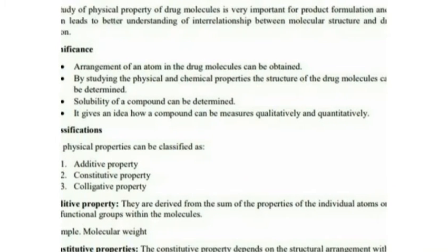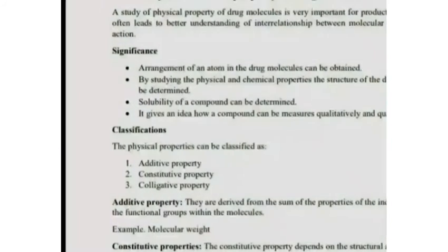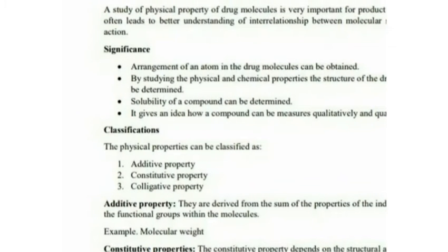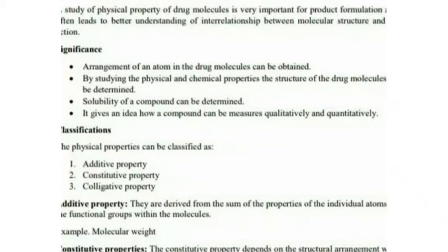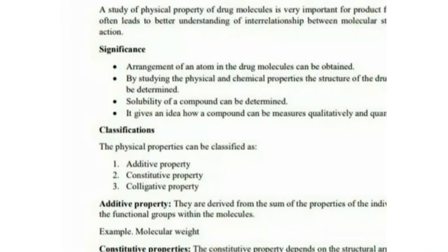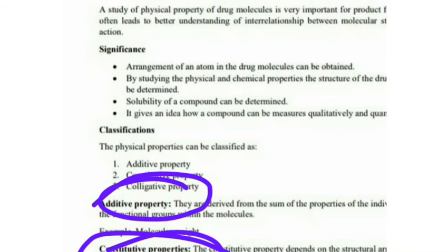Next, constitutive property — that is structural arrangement, where the arrangement is within the molecule. Constitutive property depends on the structural arrangement of the molecule. Colligative property depends on the number of particles present. For example, NaCl gives sodium and chloride ions. That is the colligative property. Summary: additive property, constitutive property — structural arrangement — and colligative property — number of particles.